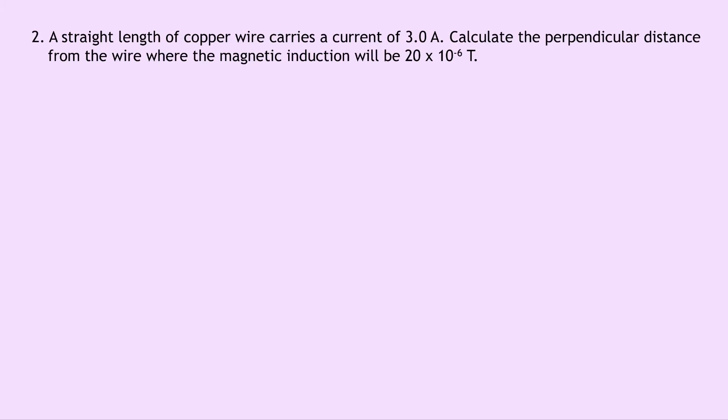Lastly, question 2 says a straight length of copper wire carries a current of 3.0 A. Calculate the perpendicular distance from the wire where the magnetic induction will be 20 × 10⁻⁶ tesla.